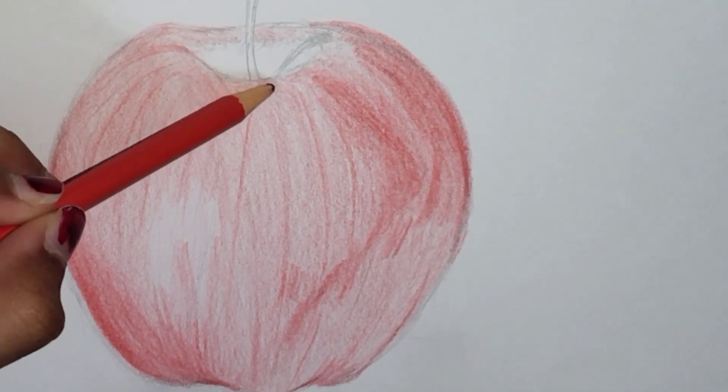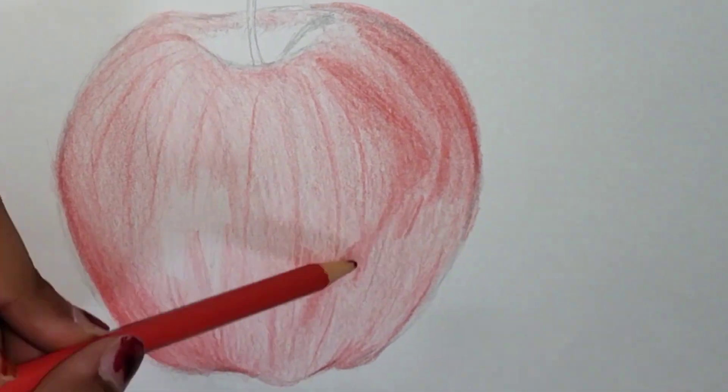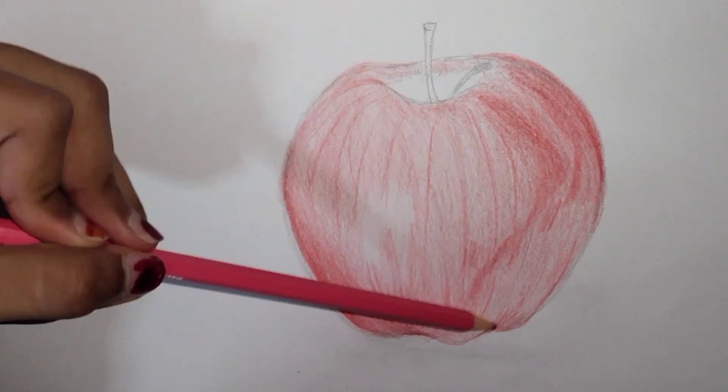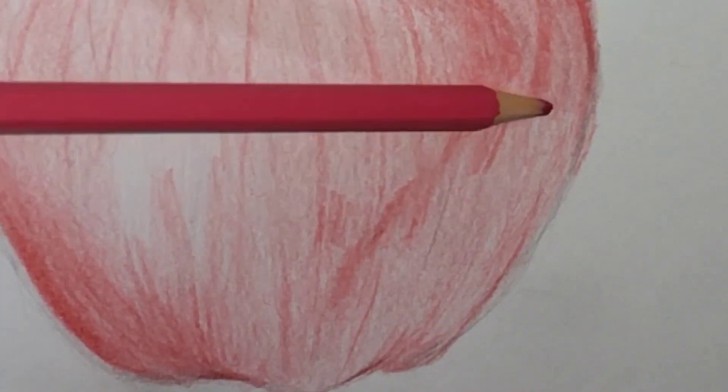So I'm going to move ahead and take my light pink color pencil, and I'm going to use this to shade only a corner of the apple as I want to give it a pinkish, a light pinkish type effect.